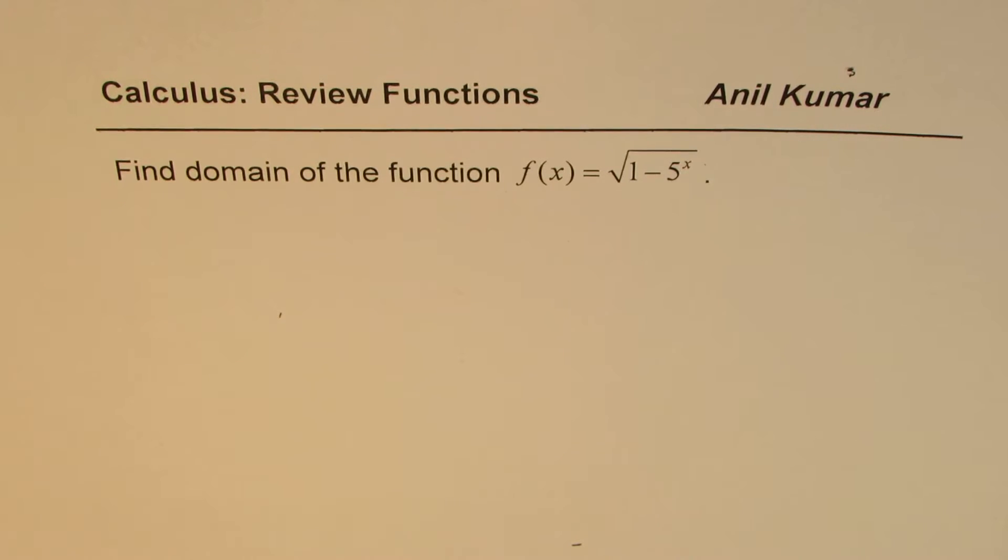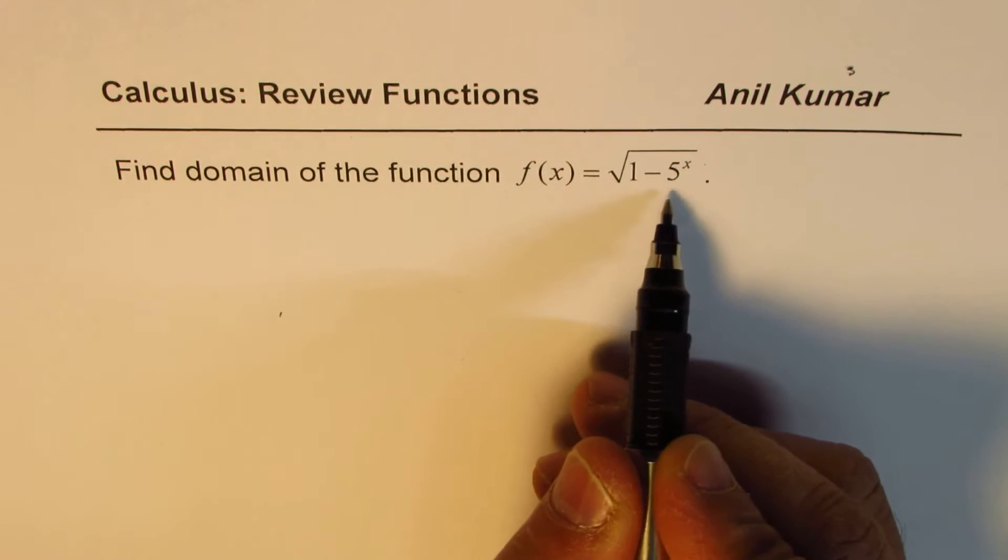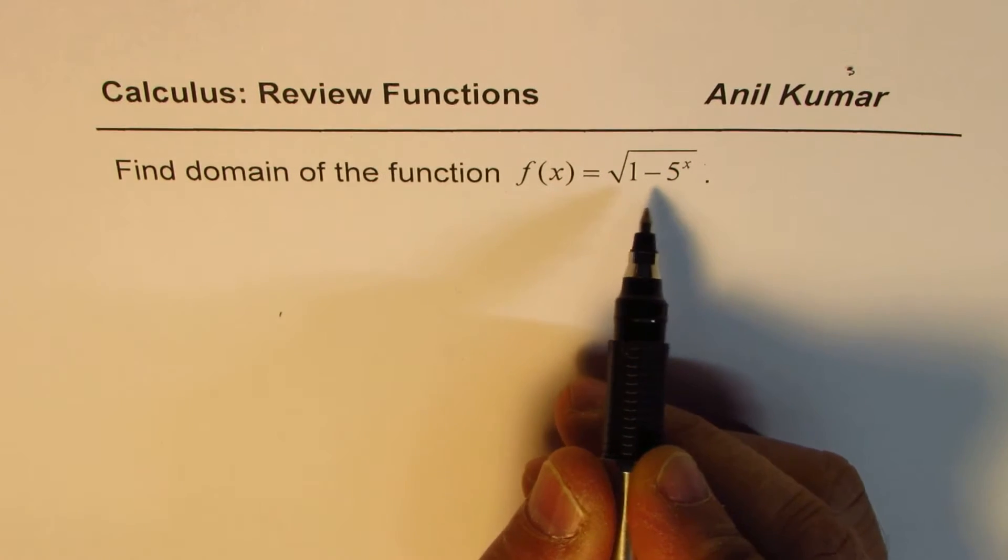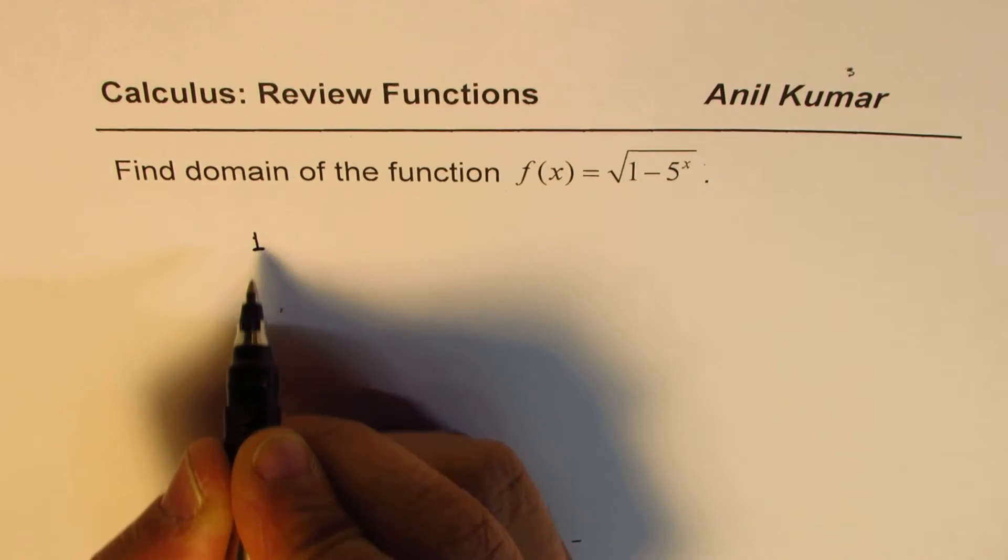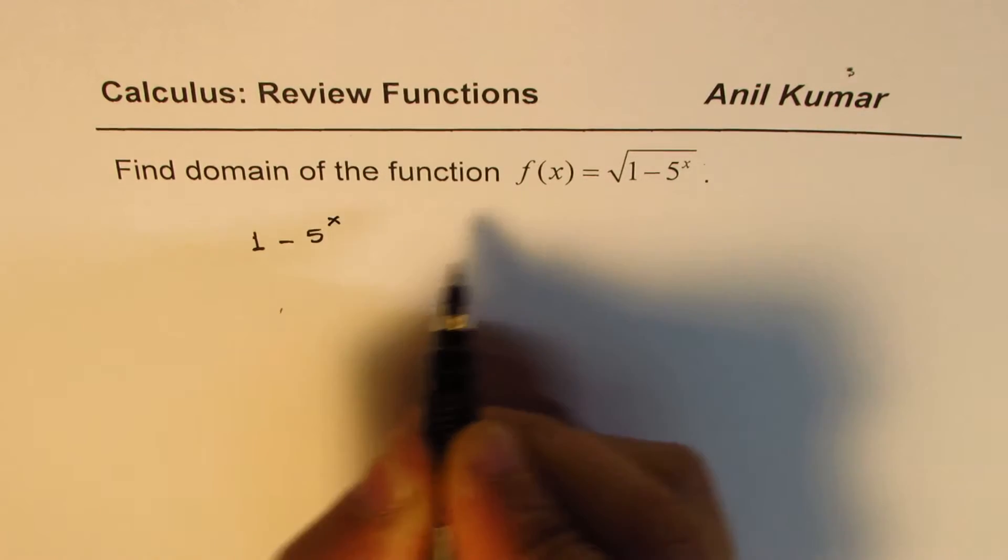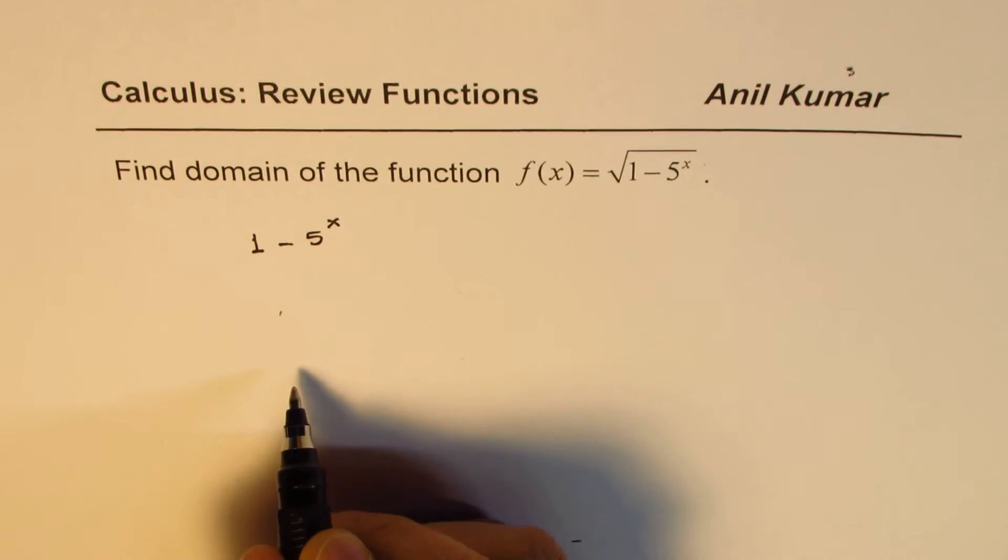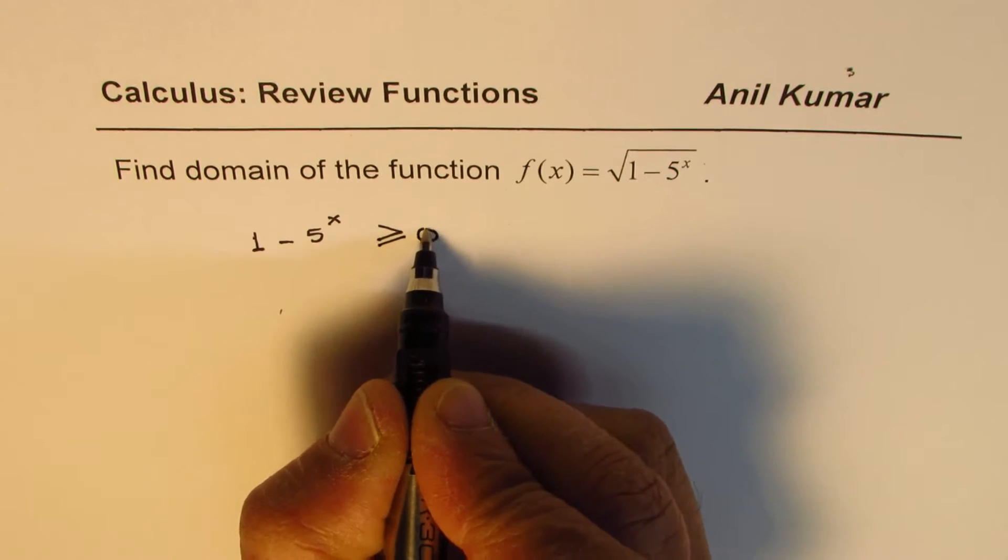Now, as you know, within a square root we should have a non-negative number, right? So therefore, to find the domain, we should solve the inequality 1 - 5^x, whatever is there within the square root, has to be greater than or equal to 0, non-negative.